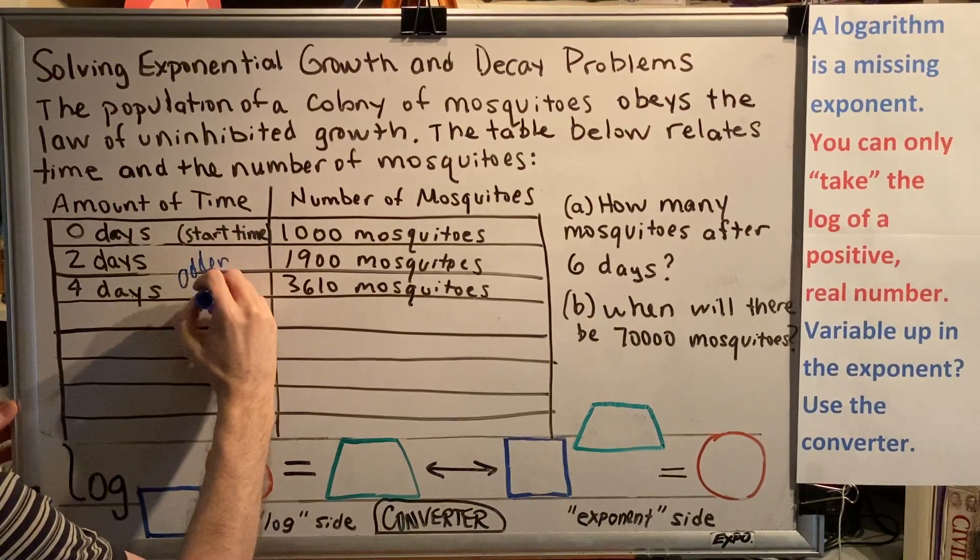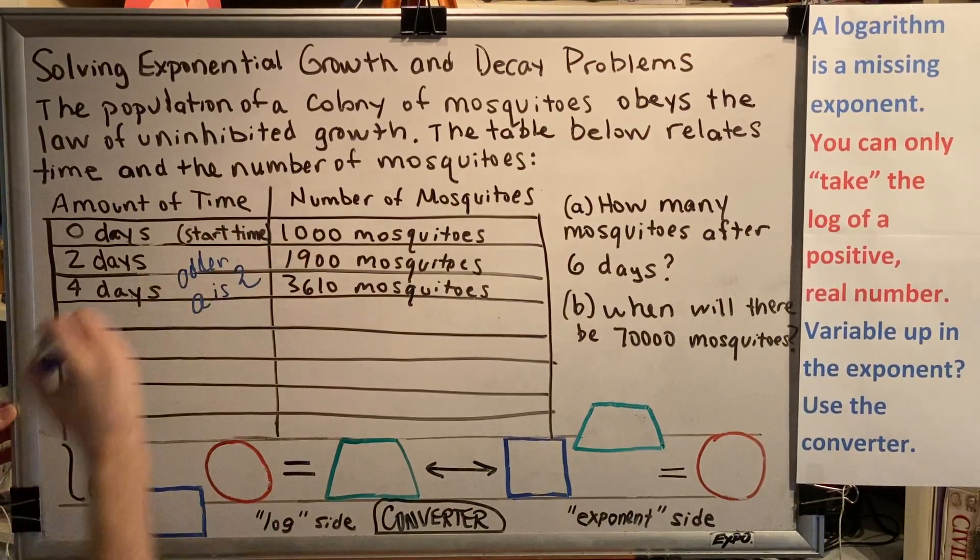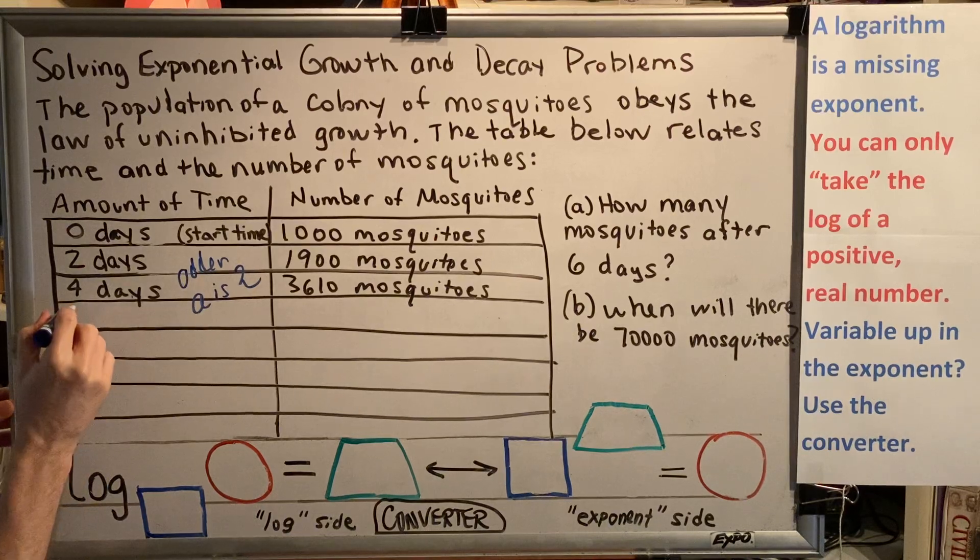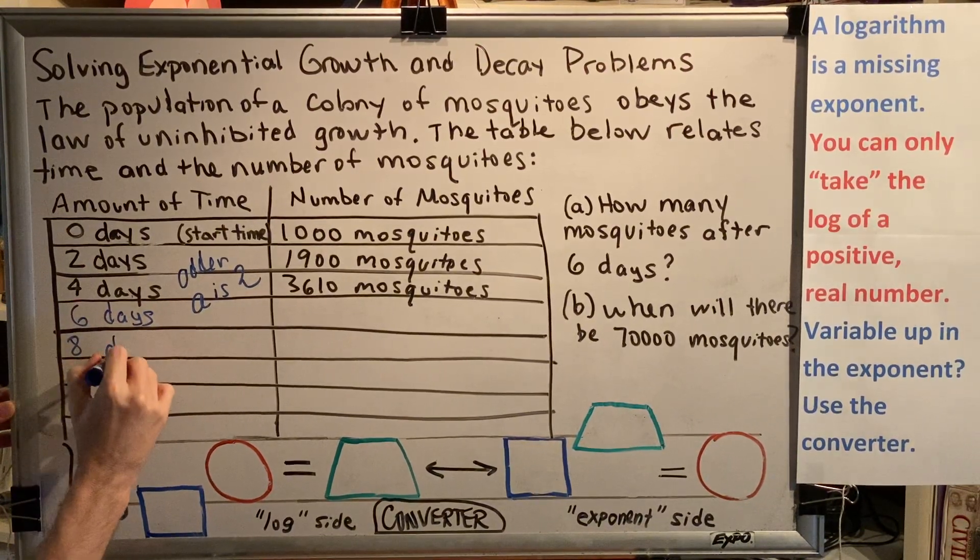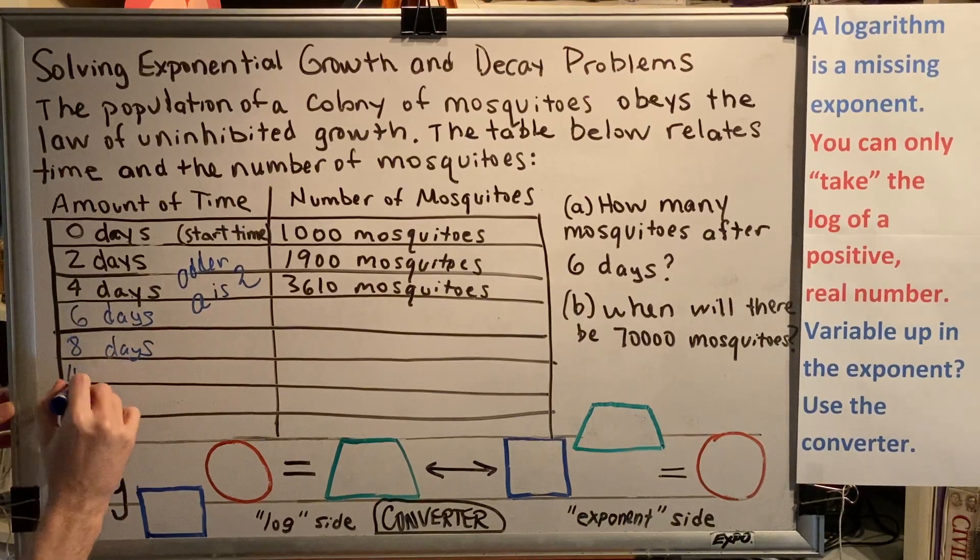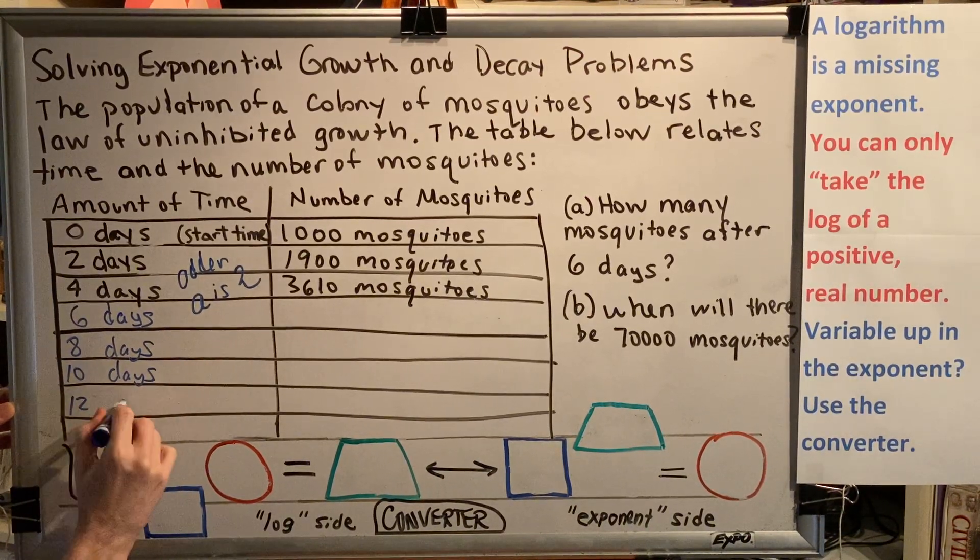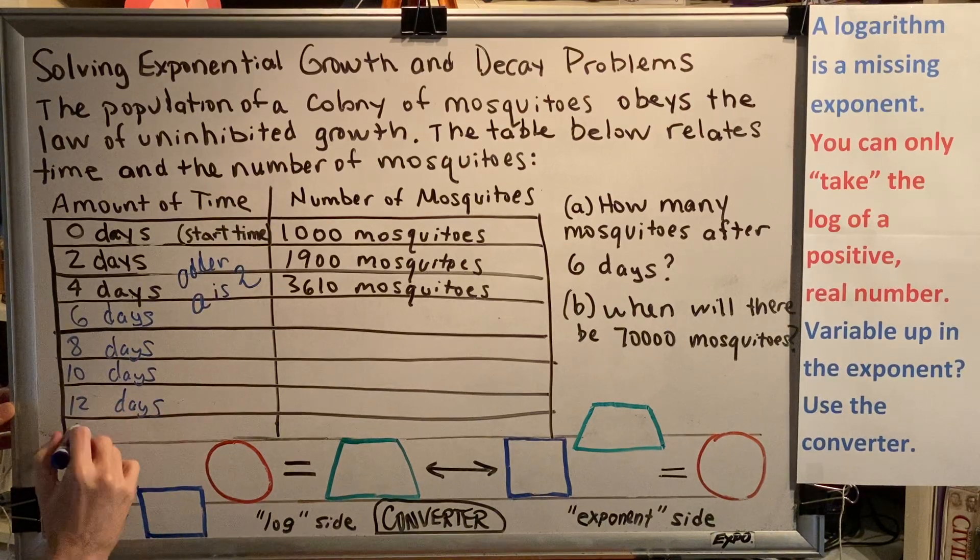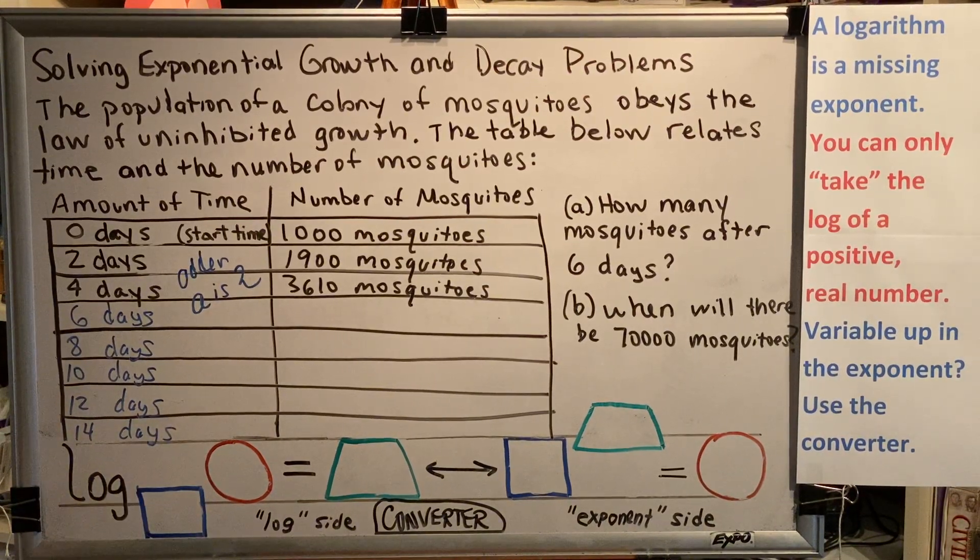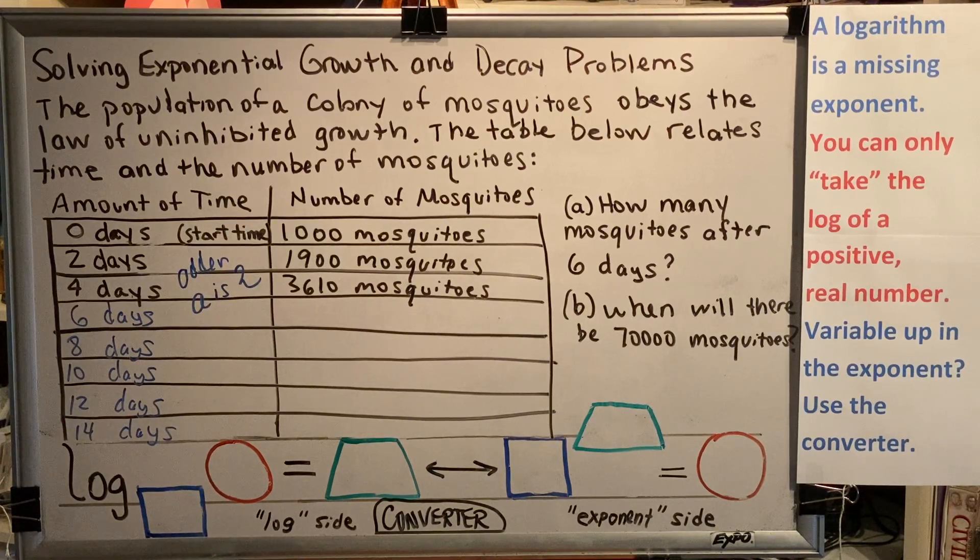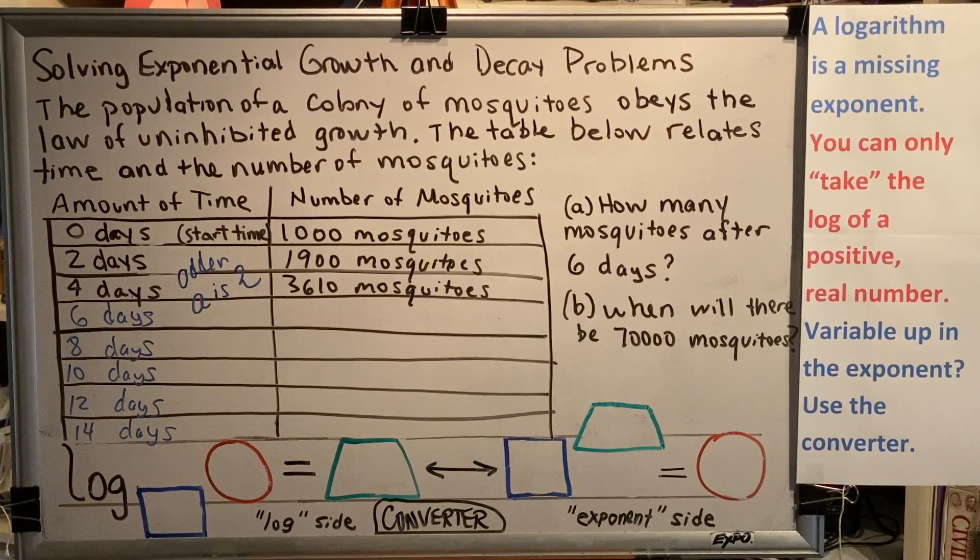So what's the pattern here for adding? What do we add to zero to turn it into a two? And what do we add to two to turn it into a four? The answer is two. The adder A is two. So if we add two all the way down the chart, then we'll have six days, eight days, 10 days, 12 days, 14 days.